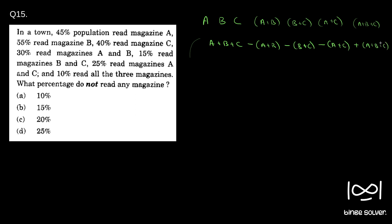So what happens if you do this? You will remove all the double counting and get the total number of people in the region given. This is what we do in the exam hall and we can quickly find the answer.